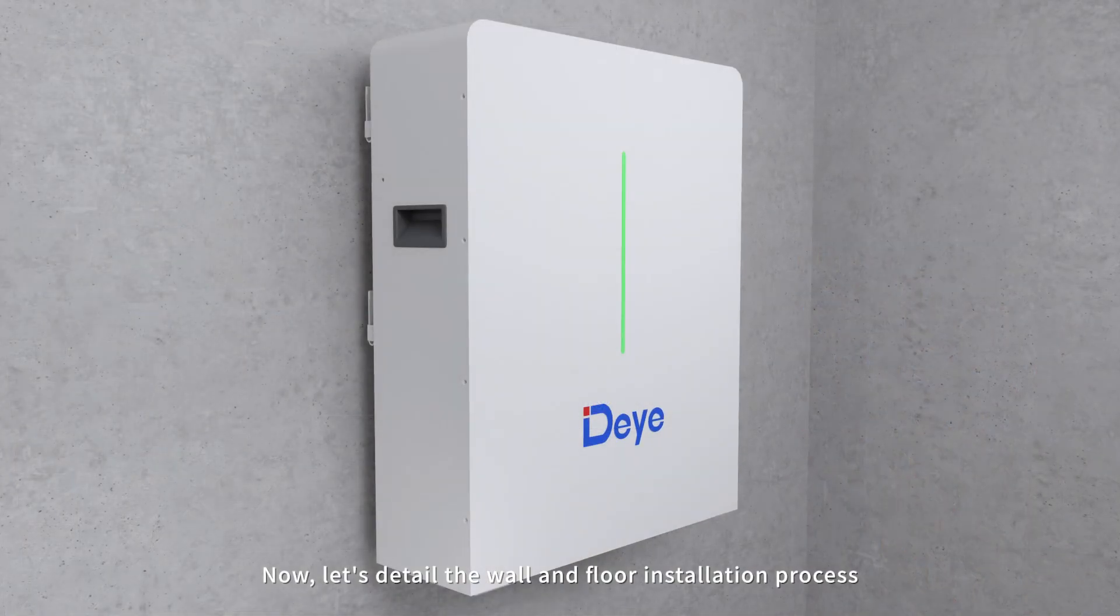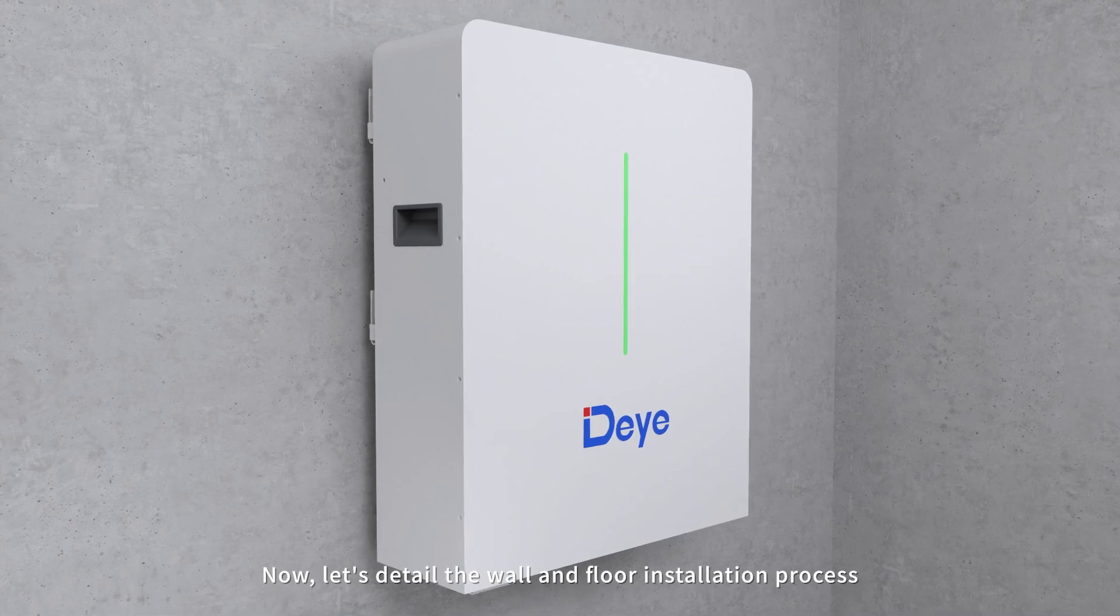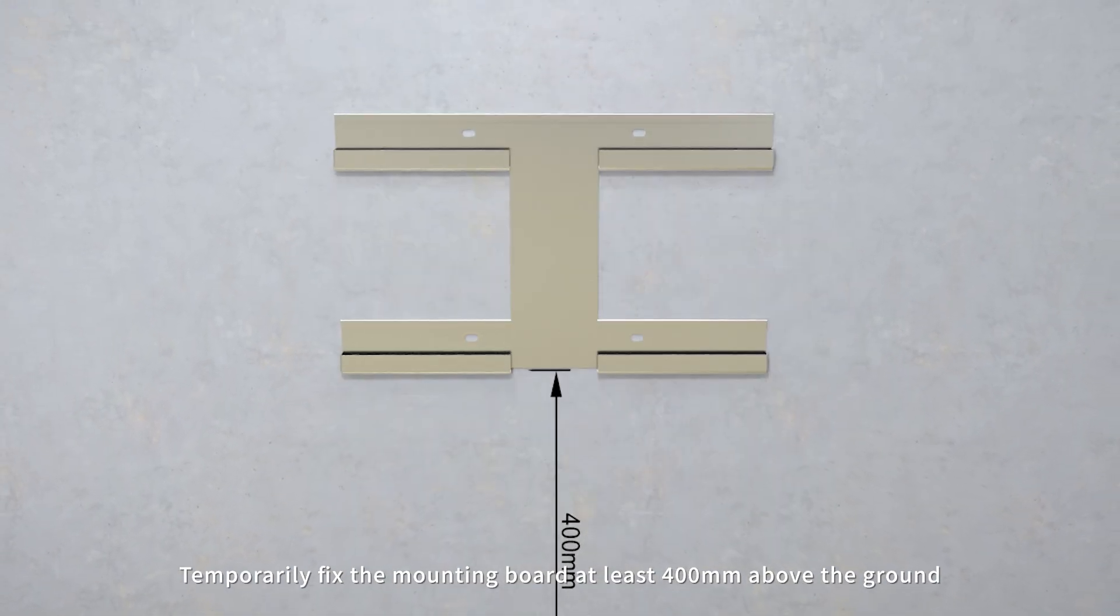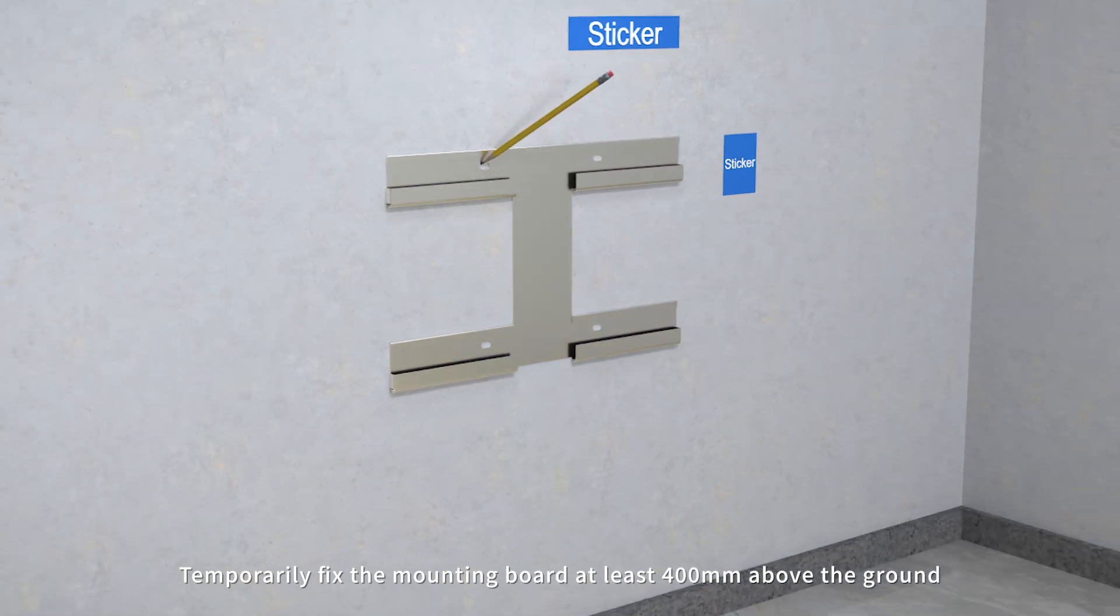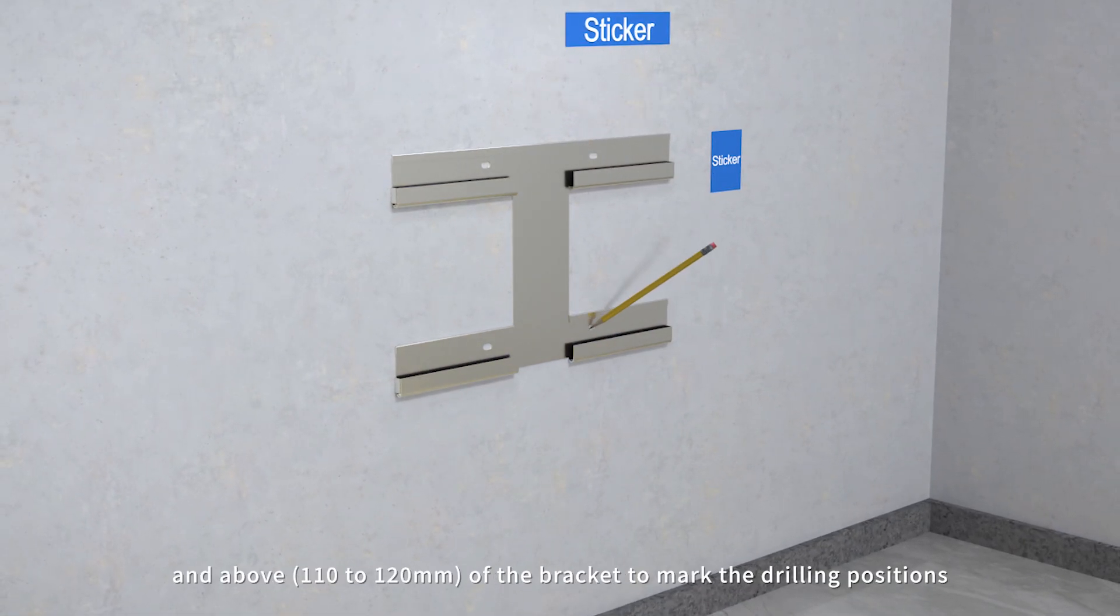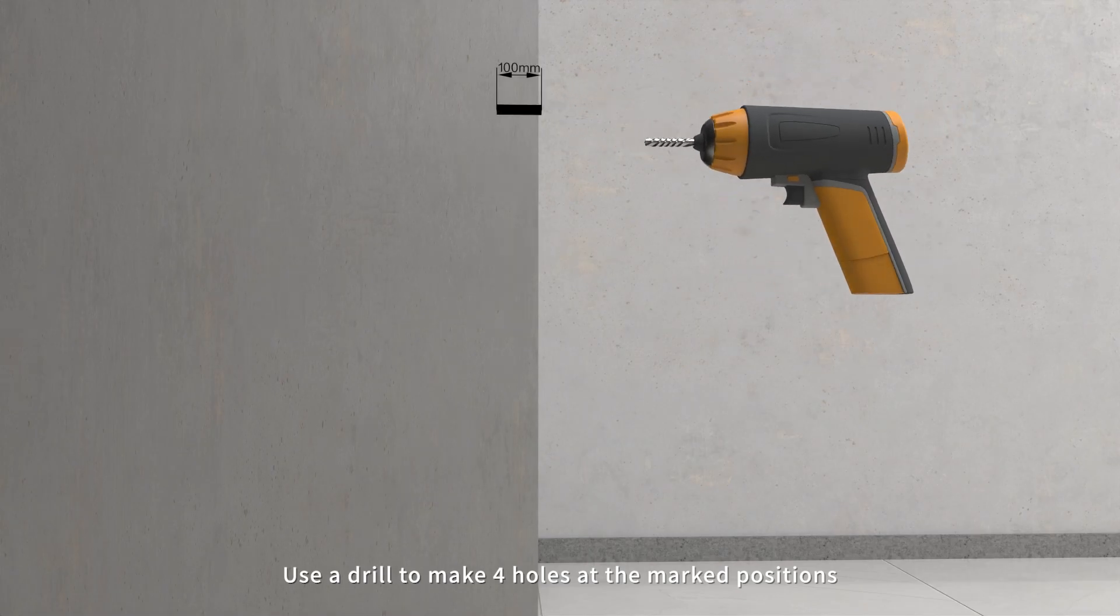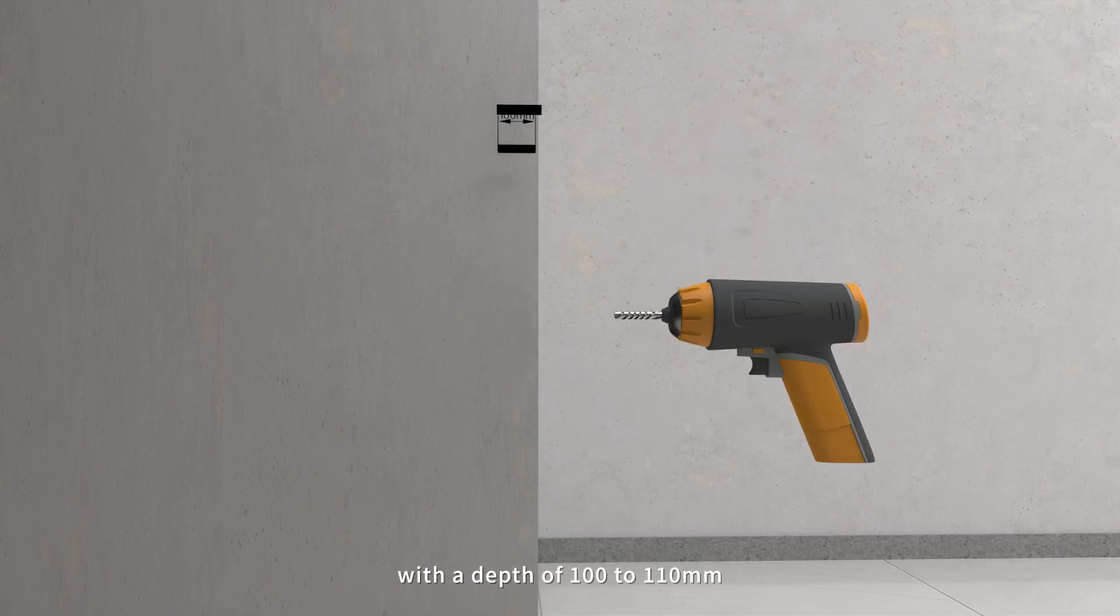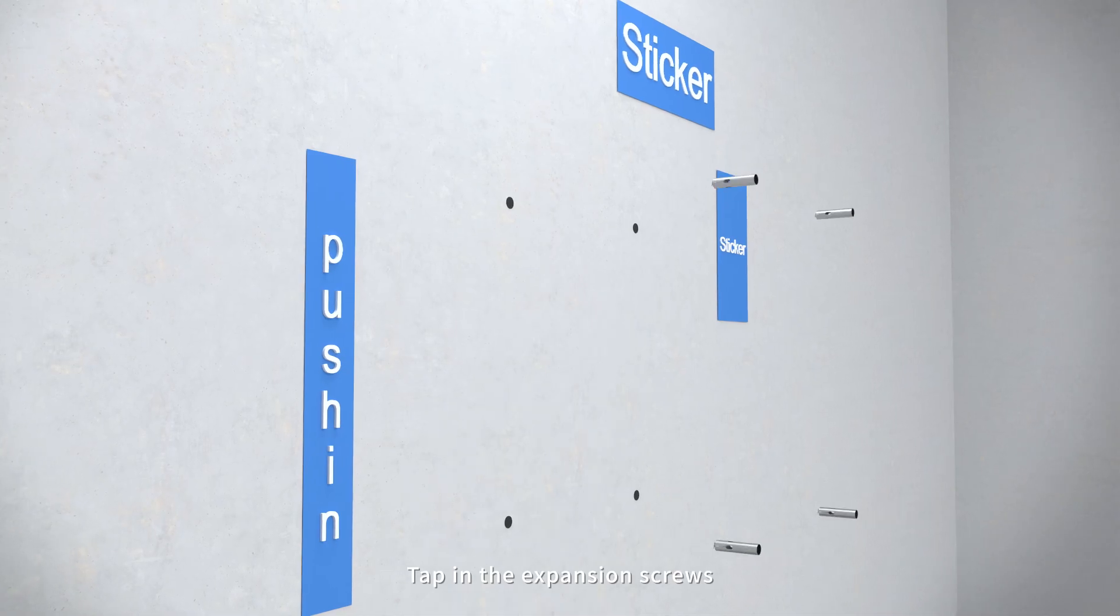Now let's detail the wall and floor installation process. Temporarily fix the mounting board at least 400 millimeters above the ground. After fixing, place stickers on the right side and above the bracket to mark the drilling positions. Use a drill to make four holes at the marked positions with a depth of 100 to 110 millimeters.